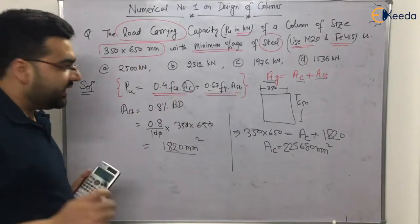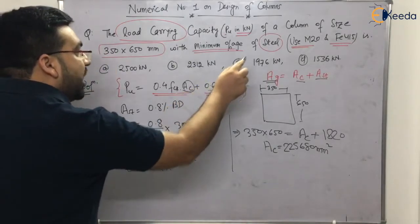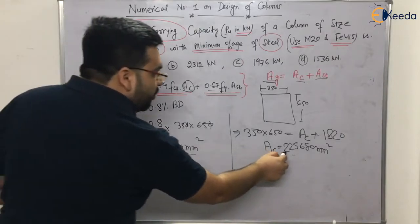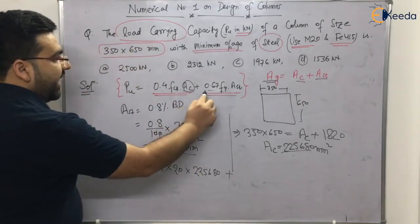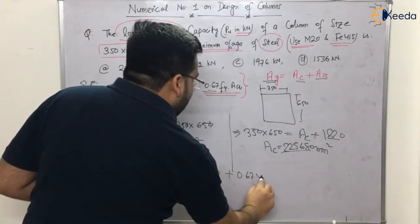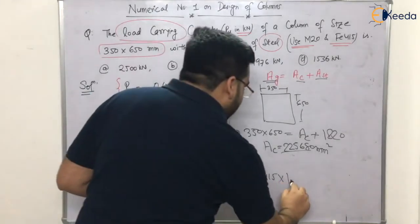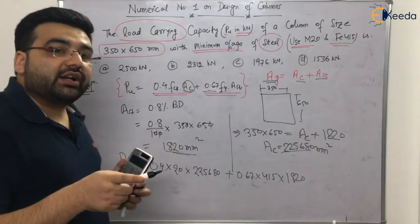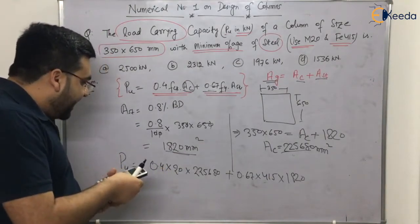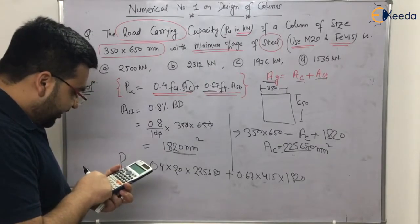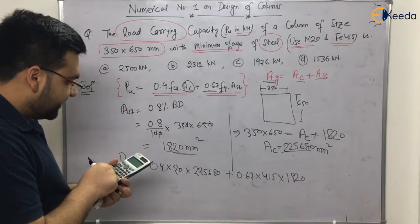So Pu will be equal to 0.4 into FCK, that is 20, into area of concrete 225,680, plus 0.67 into FY, that is 415, into area of steel 1820. It will come out in Newton, and I have to calculate the answer in kilonewton, so I have to divide by 1000. First, let me calculate the values: 0.4 into 20 into 225,680, plus 0.67